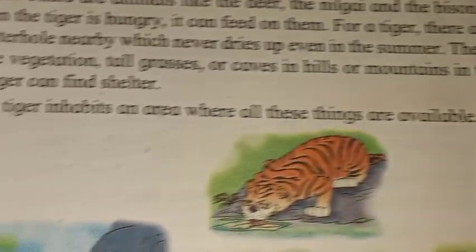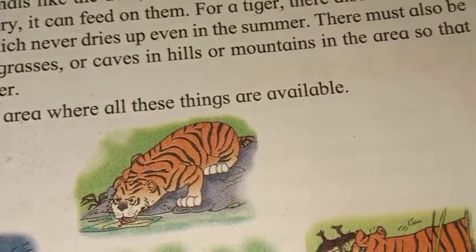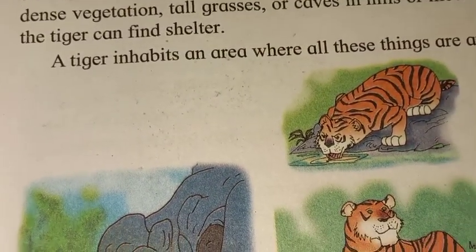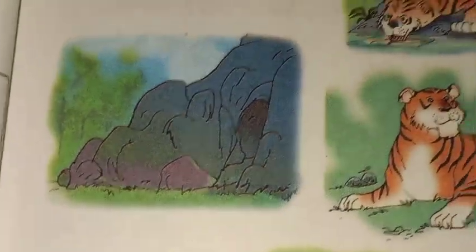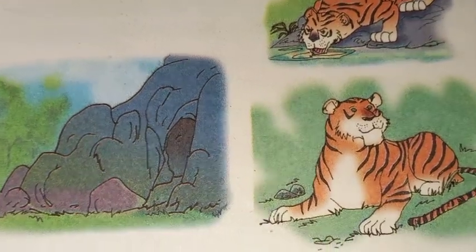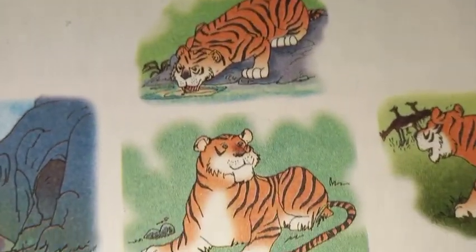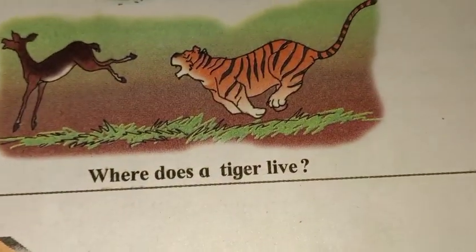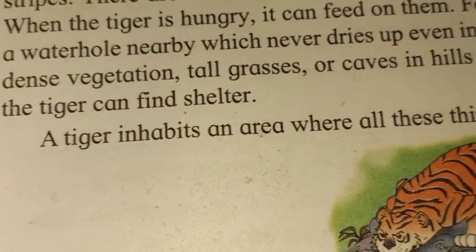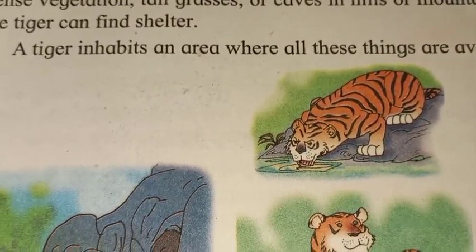There must also be dense vegetation, tall grasses, caves in hills or mountains in the area, so that the tiger can rest and take shelter. The tiger needs food, water, and shelter. So where does a tiger live? A tiger lives in an area where all these things are available — all these things available in the same place.